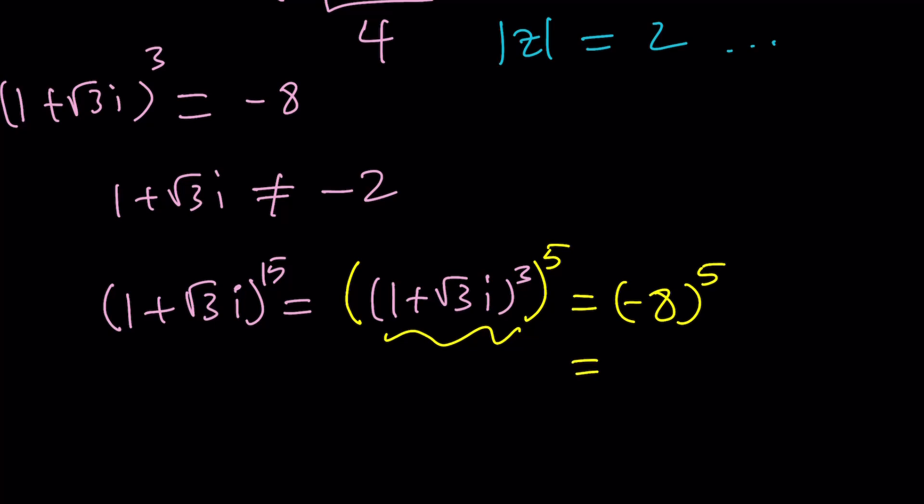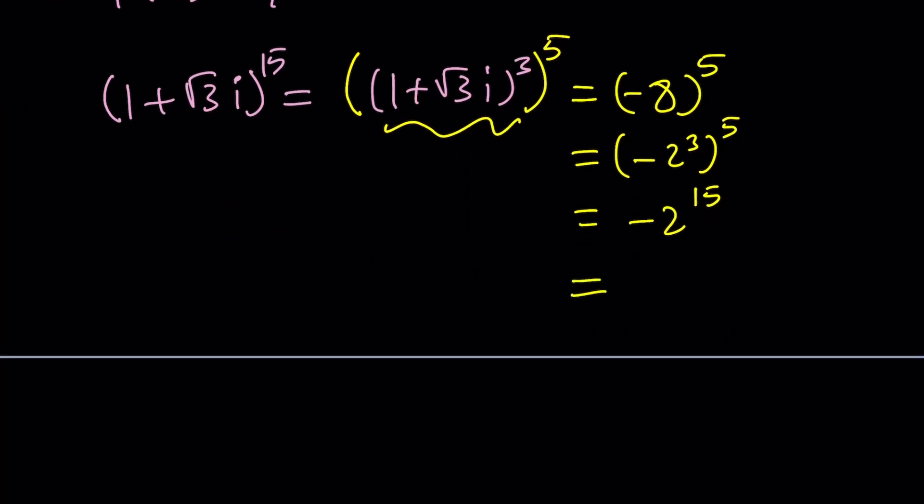But negative 8 is negative 2 to the third. So then it's going to become negative 2 to the 15th power. Notice that negative 1 to the fifth power is negative 1. So negative 2 to the 15th power, 2 to the 15th power is 32,768. So the answer is going to be negative 32,768. Make sense? I hope it does. Okay, let's go ahead and take a look at the second method.